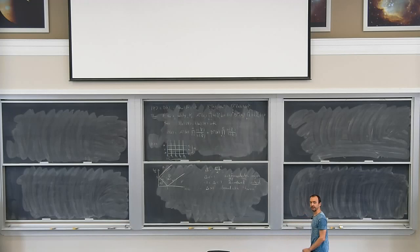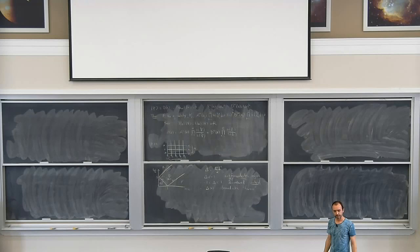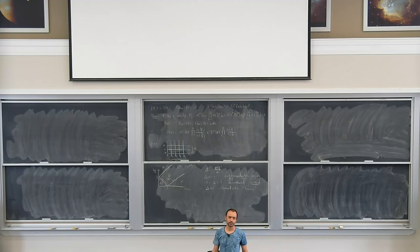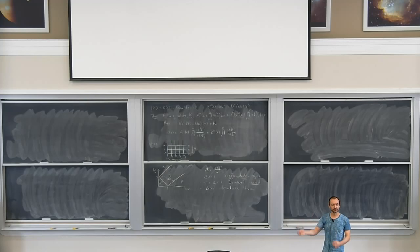A student asks whether there's something to say about the length of loops formed by following paths. The speaker responds: they're not really loops, because the path can only go north and east, so their length is pretty much constrained to be the whole size of the system. There's probably not much to be said.